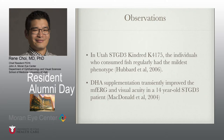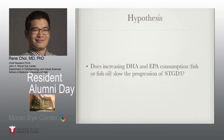Another case study showed that dietary DHA supplementation transiently improved the multifocal ERG and visual acuity in a 14-year-old patient with dominant Stargardt's. This led us to ask: does increasing DHA and EPA consumption using fish oil slow the progression of dominant Stargardt's disease?